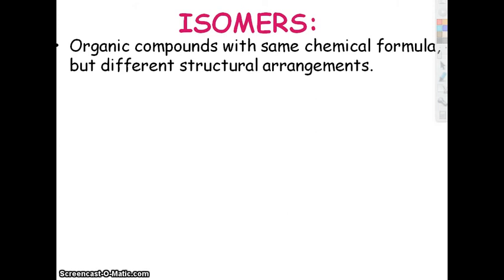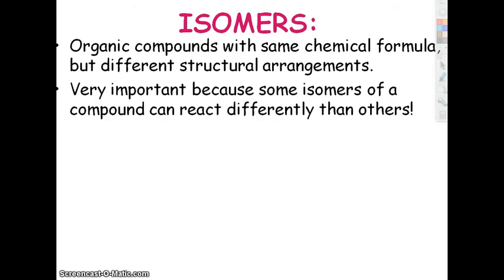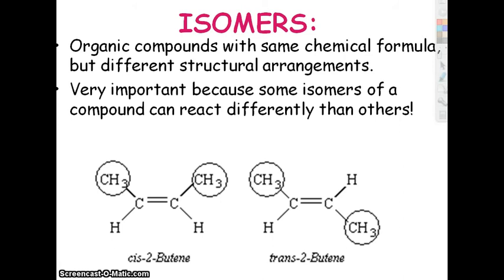Isomers: organic compounds often have the same exact formula, but when you draw them you can draw them in more than one way. If I gave everybody six carbons, twelve hydrogens, and six oxygens and said build me something, you might come up with a whole bunch of different arrangements — those are called isomers. The reason it's important is that the way they are arranged in space three-dimensionally changes the way they react in your body.